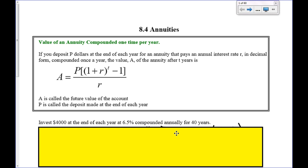So, here we're going to be looking at a value of an annuity compounded one time per year, and this is our formula for it. I want you guys to take a second and look below. The terms on here are the same as what they were before. P is your principal, or the amount that you're putting in, your payment each time. R is your rate in terms of decimal. T is the amount of time. It says, invest $4,000 at the end of each year at 6.5% compounded annually for 40 years. Take a minute right now and see if you guys get the same formula I do.